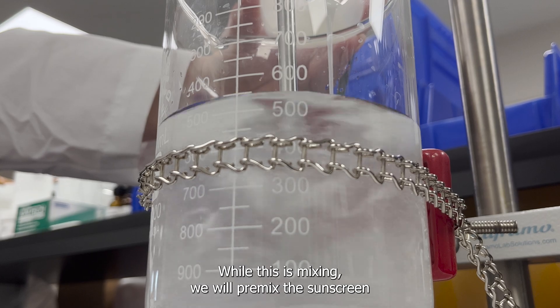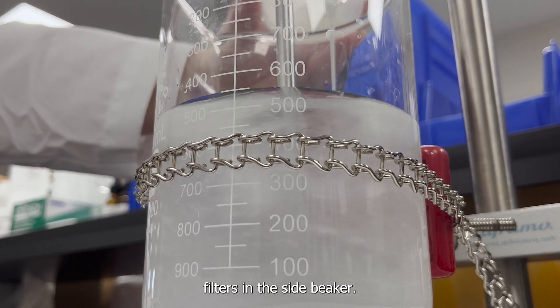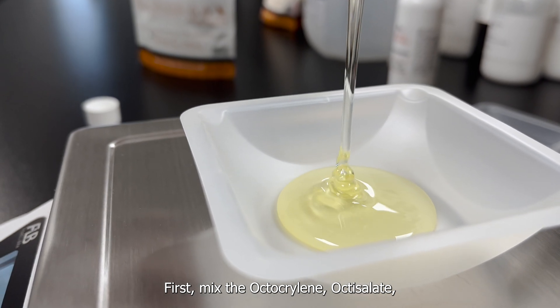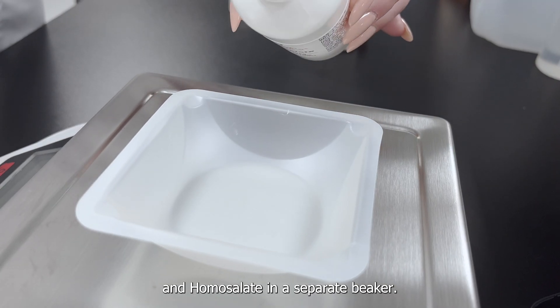While this is mixing we will premix the sunscreen filters in a side beaker. First mix the octocrylene, octosalate, and homosalate.